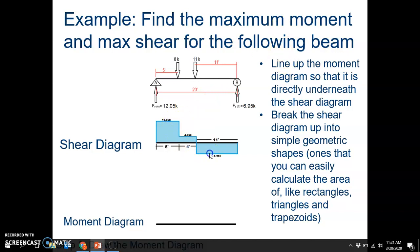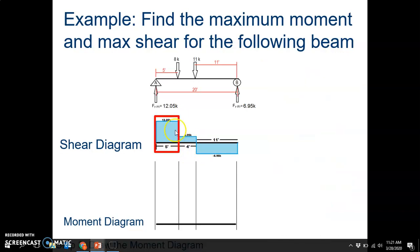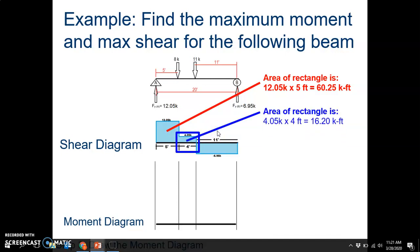Right here I see 3 rectangular shapes, and I can easily get the area of each of these. This rectangle right here is a length of 5 and a height of 12.05, so the area is 60.25 kip feet. This rectangle is 4.05 times 4, or 16.2 kip foot. And then this one is actually going to be a negative because it is below the x-axis or the beam. That is going to be negative 6.95 times 11, which is going to give me 76.45 kip feet.